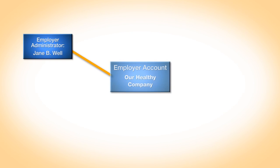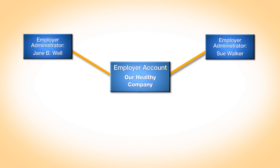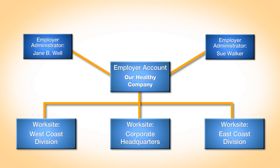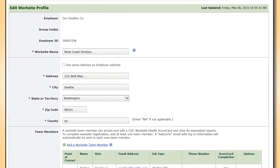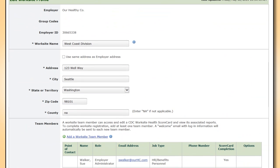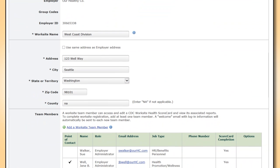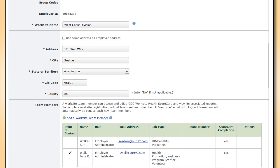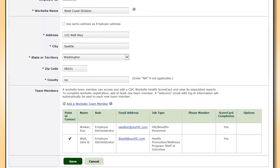Let's review. Jane has created an account for Our Healthy Company, registered two employer administrators, and is now ready to add three worksites. Worksites can be divisions, departments, single locations, or smaller organizational units where different types of wellness programs are in place. When Jane clicks on the Register a New Worksite link, a screen appears for her to enter contact information about the worksite and add the team member who will be associated with the worksite.